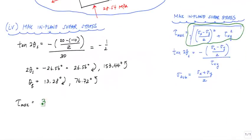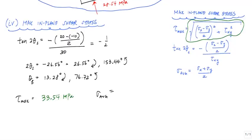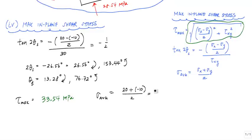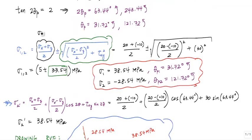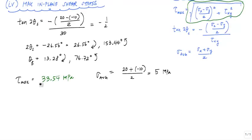So tau max is 33.54 megapascals. Sigma average is just sigma x plus sigma y divided by 2. Technically, you've also calculated this before, which was up here. This is sigma average. There you have it. You've got the shear stress, the normal stress, and the angles associated with it.